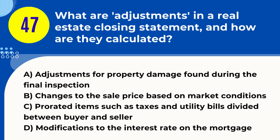Question 47. What are adjustments in a real estate closing statement, and how are they calculated? A. Adjustments for property damage found during the final inspection. B. Changes to the sale price based on market conditions. C. Prorated items such as taxes and utility bills divided between buyer and seller. D. Modifications to the interest rate on the mortgage. Answer: C. Explanation. Adjustments in a real estate closing statement refer to prorated payments for items such as property taxes, utility bills, and association fees. These are divided between the buyer and seller based on the exact period each party is responsible for these costs.